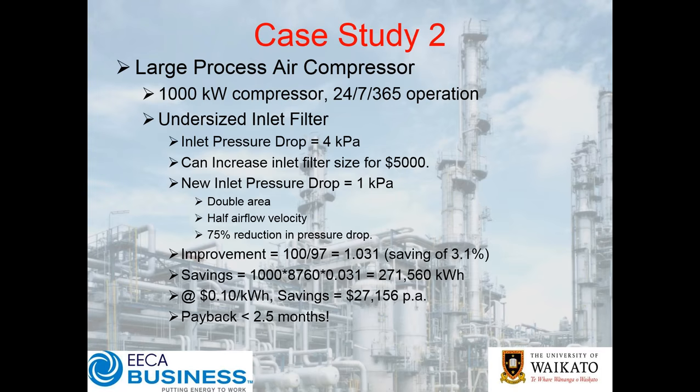We could increase the size of that filter for $5,000. We might be able to drop the inlet pressure drop from 4 to 1 kPa simply by doubling the area of that inlet filter — double the area, half the airflow velocity — and because pressure drop is the square of the velocity, we actually reduce our pressure drop by 75%.